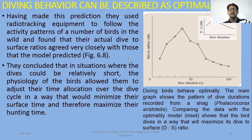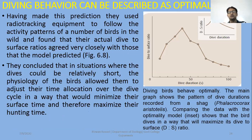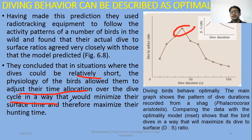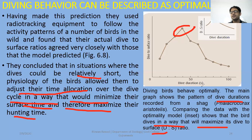They used radio tracking equipment to follow activity patterns in a number of birds and found that their actual dive-to-surface ratio agreed very closely with those that the model predicted. They concluded that in situations where the dive duration is relatively short, the physiology of the birds allowed them to adjust their time allocation over the dive cycle in a way that maximizes their surface time and therefore maximizes their hunting time. The main graph shows the pattern of dive durations recorded from a shag, comparing data with the optimal model showing that birds dive in a way that maximizes their dive-to-surface ratio and optimally feeds.